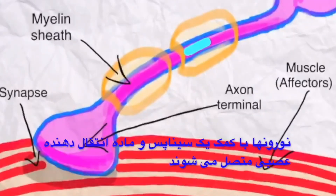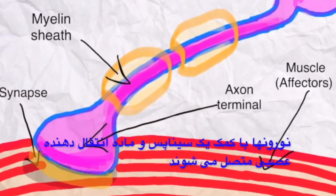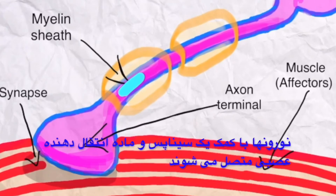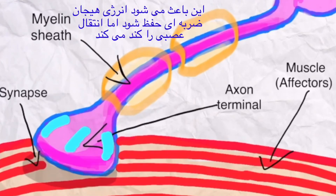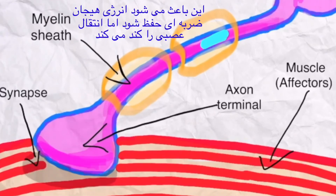A neuron meets the following neuron at a synapse. The synapse is a gap between two neurons, and when the impulse reaches an axon terminal, a neurotransmitter substance is released. This neurotransmitter substance is detected by the dendrites of the following neuron and causes new impulses to be generated. This keeps the energy of the impulses high, however it slows down neurotransmission.